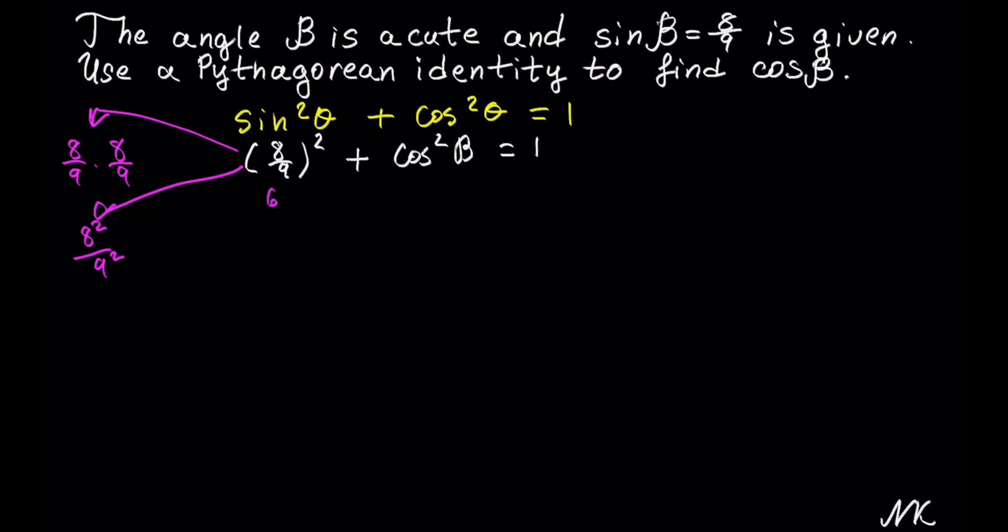Either way, you should get 64/81 instead of (8/9)². Let's keep everything else as is, plus cos² β = 1.